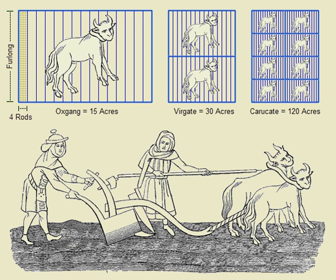For example, a certain landowner might have been said to own 32,000 acres of land, not 50 square miles of land. The acre is related to the square mile, with 640 acres making up one square mile.